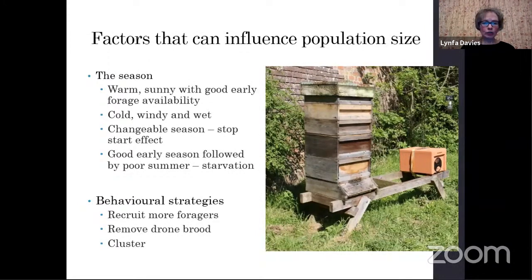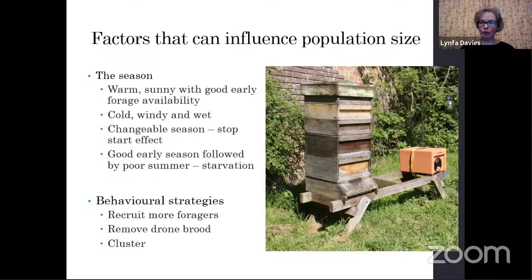Last year we also had a very good early season through March, April and into May, but here in West Wales we didn't have any rain. By the end of May the nectar had dried up, followed by a very poor summer. When it did start raining it didn't stop. We found ourselves in a situation where colonies — particularly those we'd taken a spring crop off — were actually at risk of starvation.